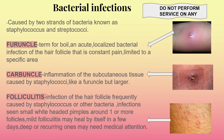The bacteria known as streptococci and staphylococci are involved. A furuncle is the term for a boil — an acute localized bacterial infection of the hair follicle that is consistent with pain, limited to a specific area. A carbuncle is an inflammation of the subcutaneous tissue caused by streptococci, like a furuncle but larger. Remember, furuncles are your acute boils, localized in a specific area, while carbuncles are the same but much larger, as seen in the picture.